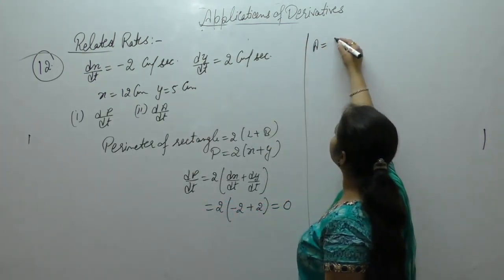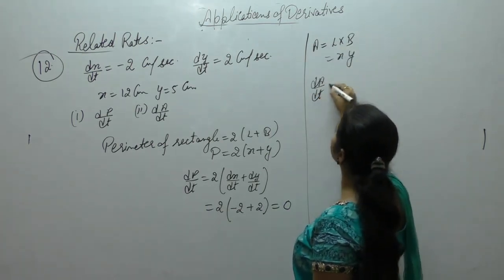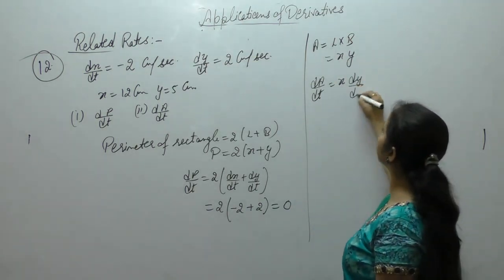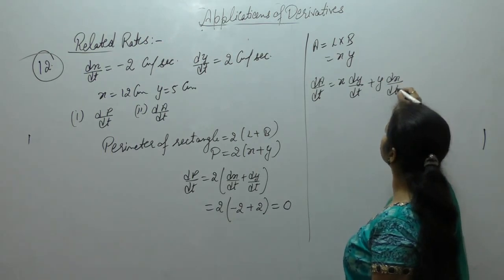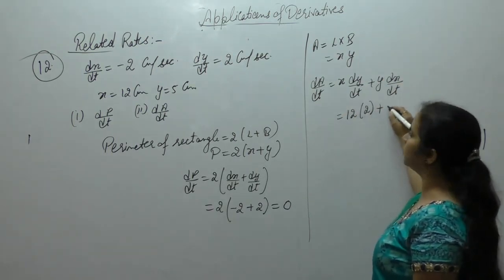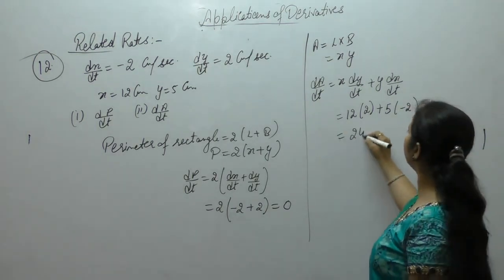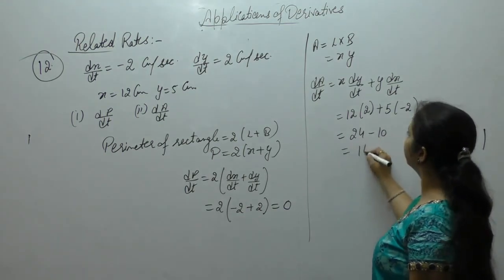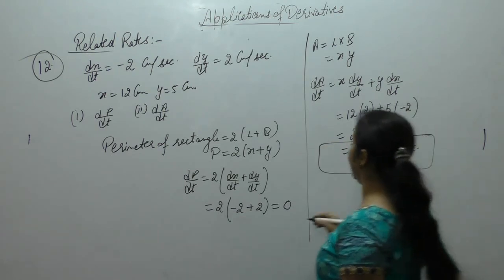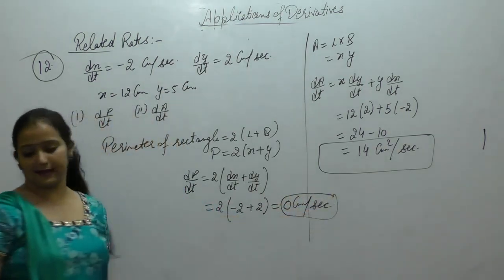Area of rectangle is length into breadth equals x into y. By product rule: dA upon dt equals x dy upon dt plus y dx by dt. Putting values: x is 12, dy upon dt is 2, y is 5, dx by dt is minus 2. So 12 into 2 plus 5 into minus 2 equals 24 minus 10 equals 14. Area is in centimeter square and perimeter is in centimeter, time is in seconds.